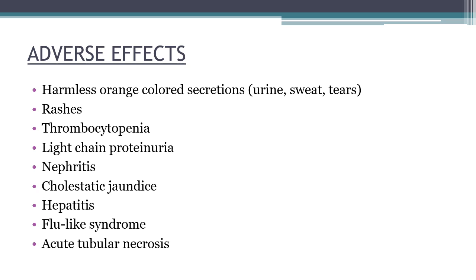The most common adverse effect of rifampin is harmless orange-colored secretions. It imparts an orange color to urine, sweat, and tears because it produces orange-colored metabolites. Contact lenses can be permanently stained. It is really important to educate the patient that his secretions might turn orange — it is a very typical orange color, like the color of Fanta or Mirinda — otherwise he'll be frightened.